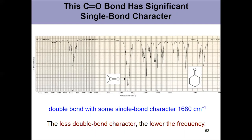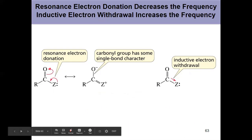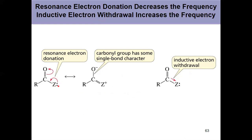Another reason these peaks move is other substituents in proximity to the double bond. If you have resonance electron donation—a lone pair on a substituent immediately next to the carbonyl can donate electrons, kicking that pi bond up. Again, the carbonyl has some single bond character, which decreases the frequency and causes it to shift right.